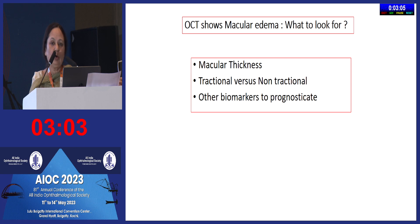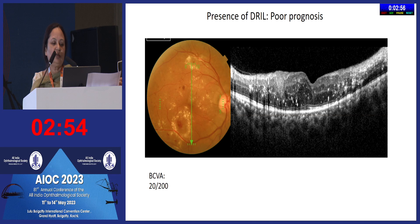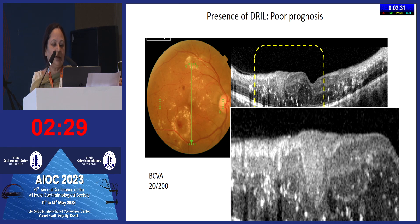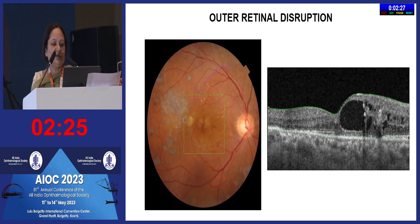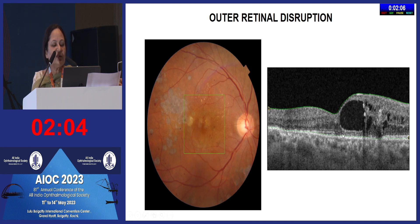On OCT, besides traction versus non-traction assessment and macular thickness, there are a few additional findings comprehensive ophthalmologists should know. DRIL (disorganization of retinal inner layers) means the inner retinal layers are not seen separately — this indicates the patient may not have good visual recovery following anti-VEGF injections, so you can counsel the patient accordingly. Disruption of the external limiting membrane is another sign — if this is disrupted, don't be tempted to add more laser.